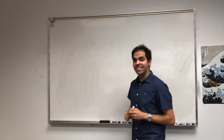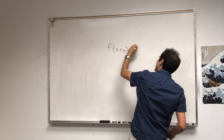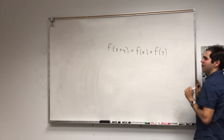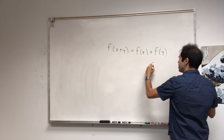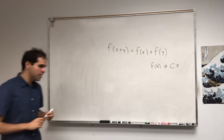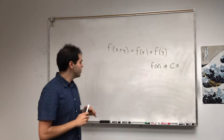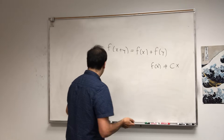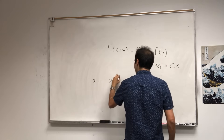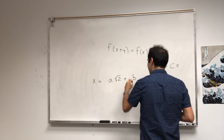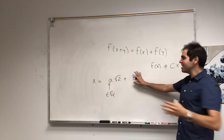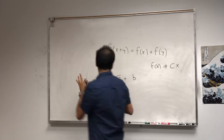Now the question is: is this true in general? The cool thing is the answer is no. If f is not continuous, there are functions satisfying f(x+y) = f(x) + f(y) that are not linear — f(x) ≠ cx. Those are crazily discontinuous. I'll be a little hand-wavy here because you need some advanced linear algebra. Any real number x can be written as a rational multiple of √2 plus other things, where a is rational and b is something linearly independent of √2.